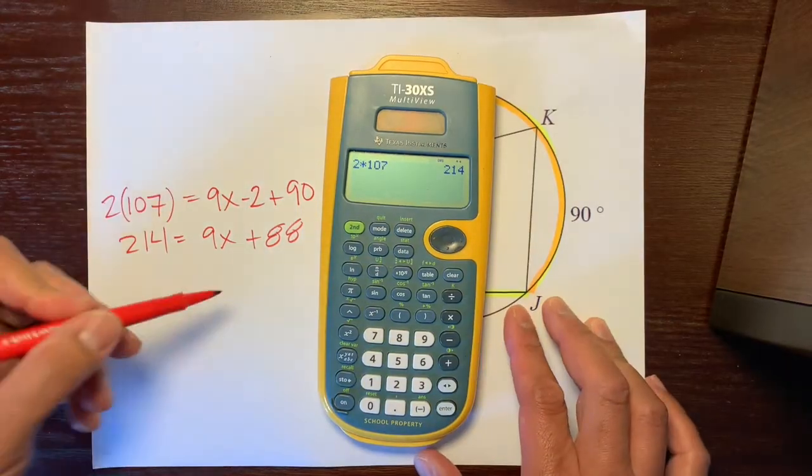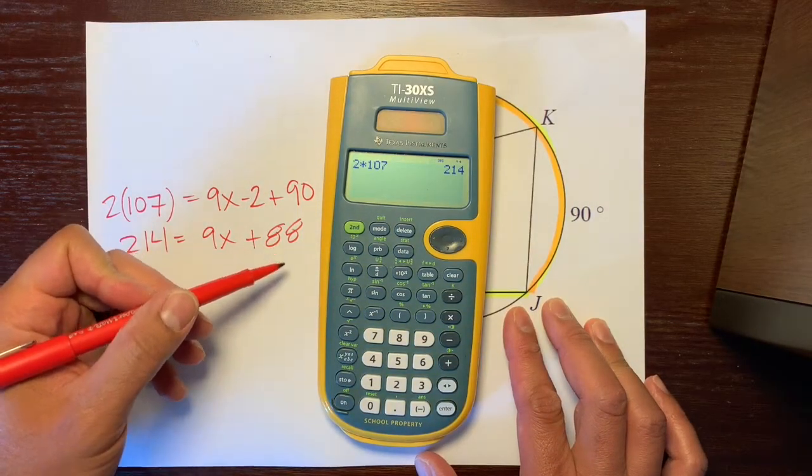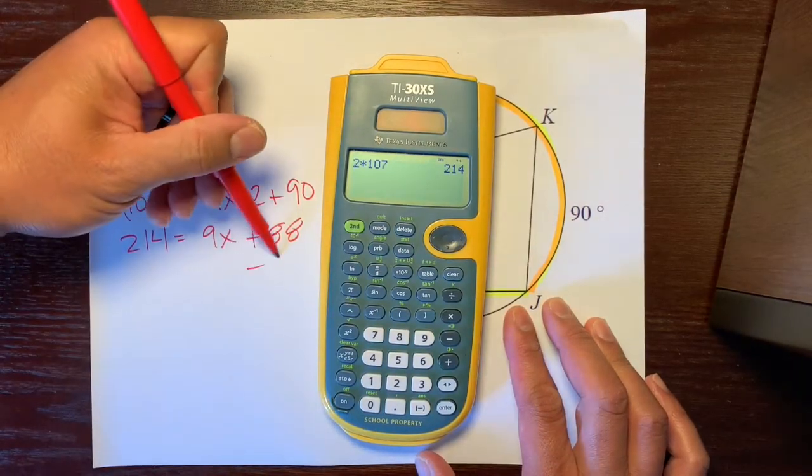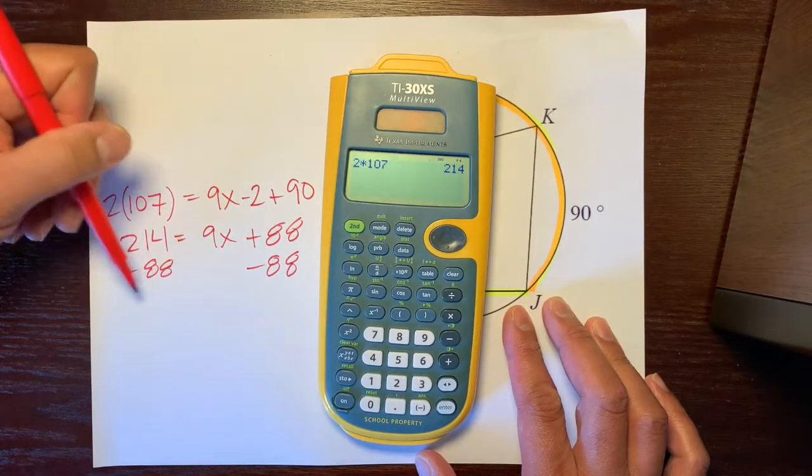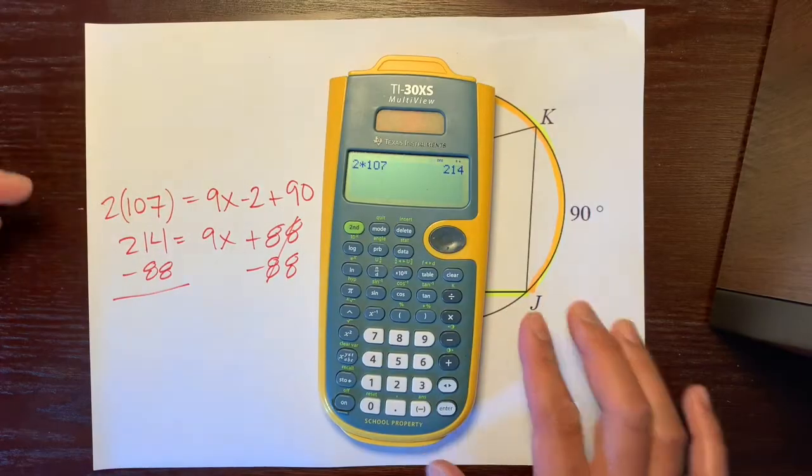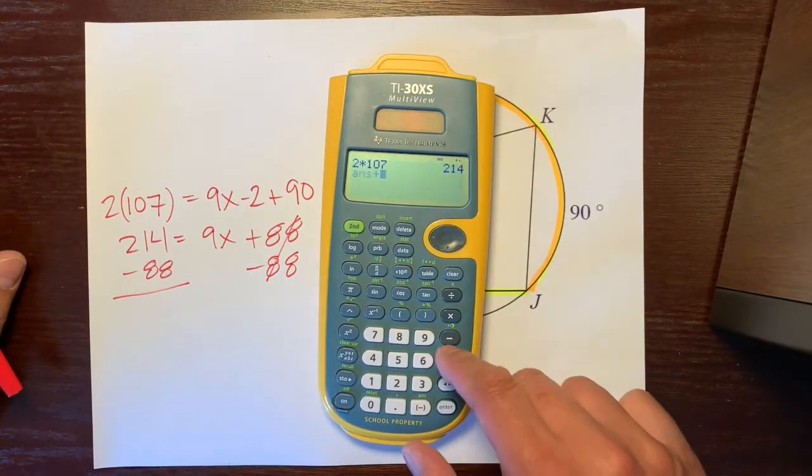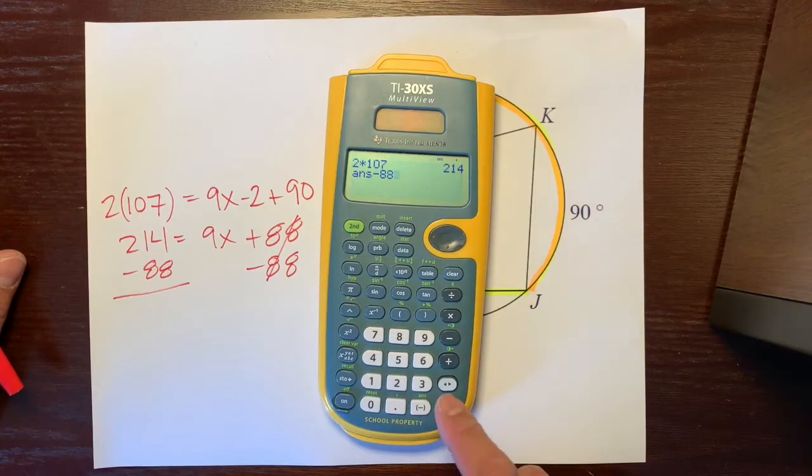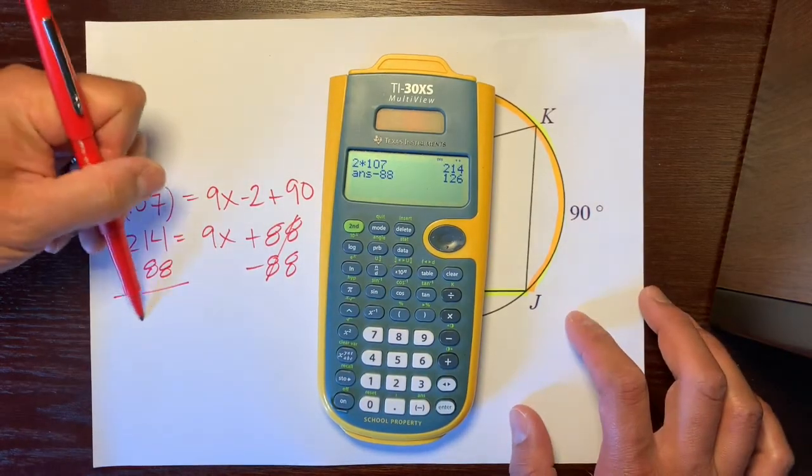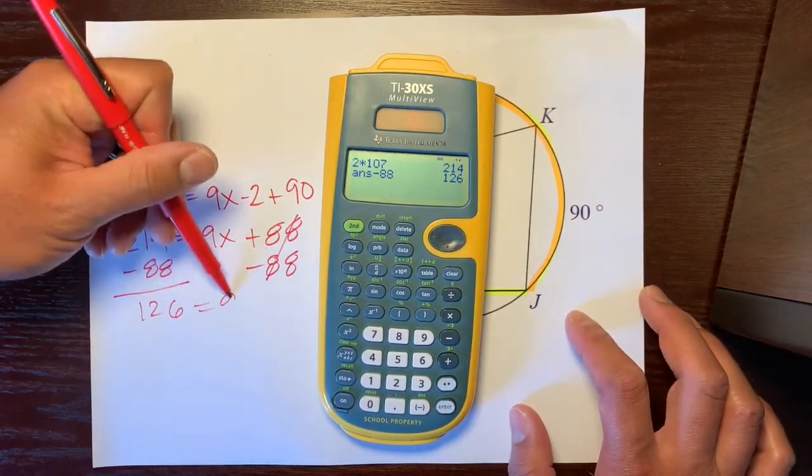And then we're going to take this 88 and bring it over to this side by subtracting the 88 on both sides. These cancel out. 214 minus 88 is 126 equals 9x.